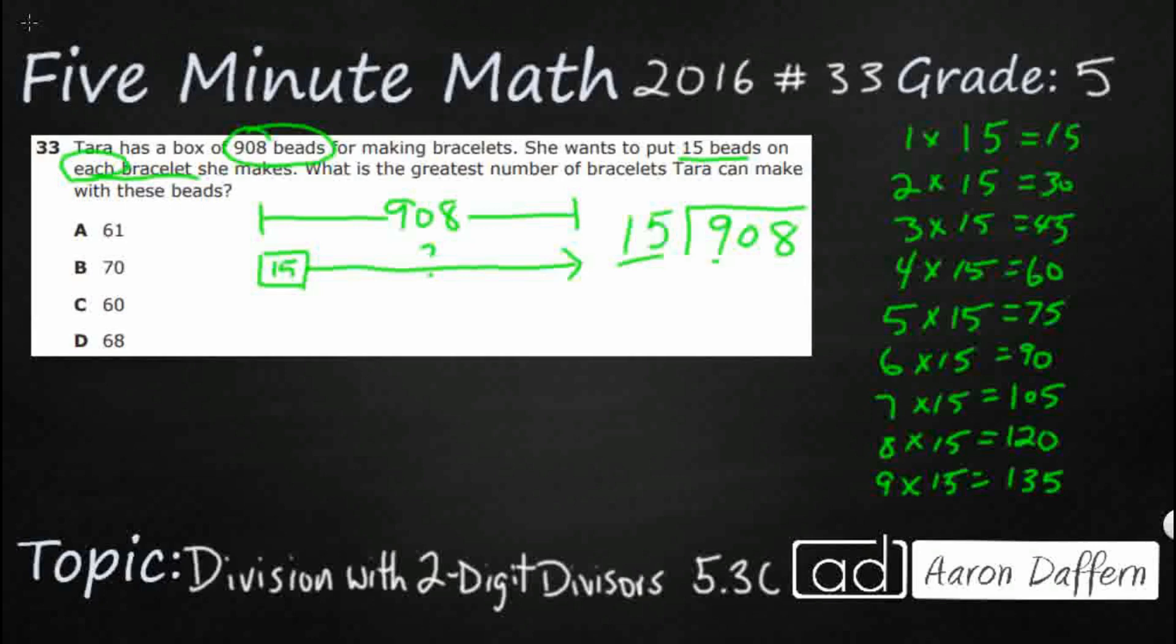15 does not go into 9, but 15 goes into 90. Take a look at this, I already figured that out right there. It goes in there 6 times. 6 times 15 is 90. So there's nothing left over. I need to bring my 8 down, and 15 does not go into 8 at all. So what that's going to do is, that's going to leave me with 60 as a remainder of 8.